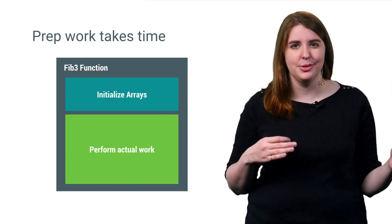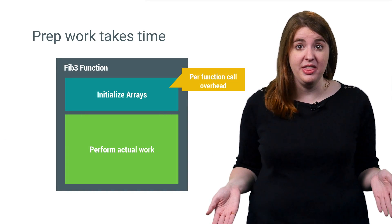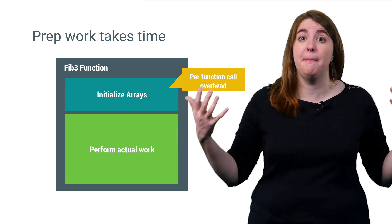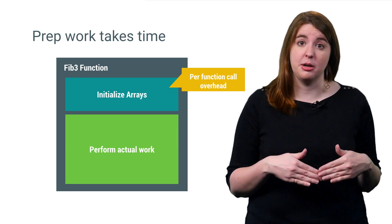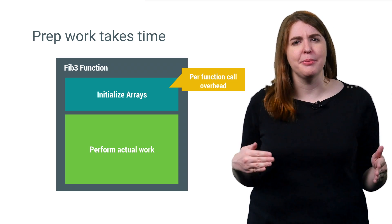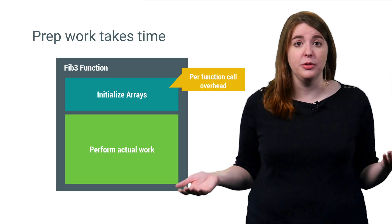Almost everything in computing has some associated performance overhead that goes along with it. This can be something big, like decompressing an image, which requires a bunch of memory allocations to store the intermediate data. Or it can be something small, like the extra memory copies and pointer management that tag along with recursive functions.